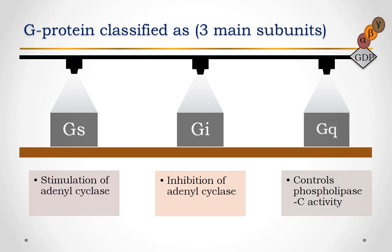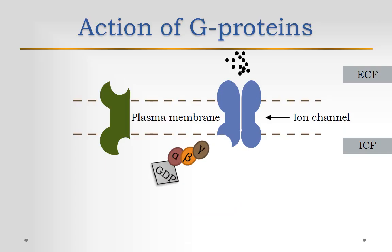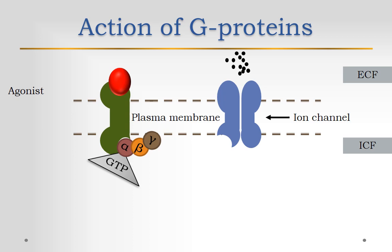In the resting state, that is, the switch-off state, GDP is bound to the alpha subunit of the alpha-beta-gamma trimer. When the receptor is activated by the binding of an agonist, a conformational change occurs, causing it to acquire a high affinity for the alpha-beta-gamma trimer unit of G protein. During this process, GDP dissociates from the alpha-beta-gamma subunits while GTP associates in its place.